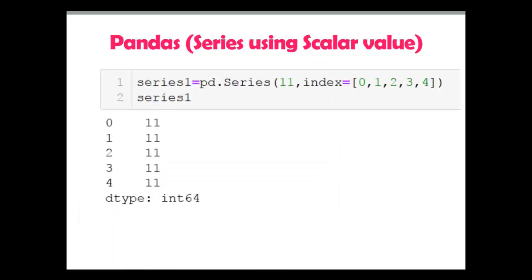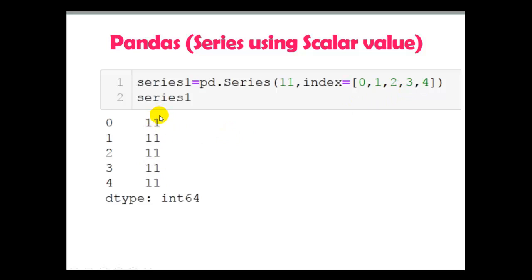Next, series using a scalar value. Here pd.Series is used with the scalar value 11, and I have manually created an index using the index parameter: 0, 1, 2, 3 and 4 — which we will discuss in detail in the next video. This scalar value is replicated according to the number of indexes, which is 5, so 11 is replicated 5 times.